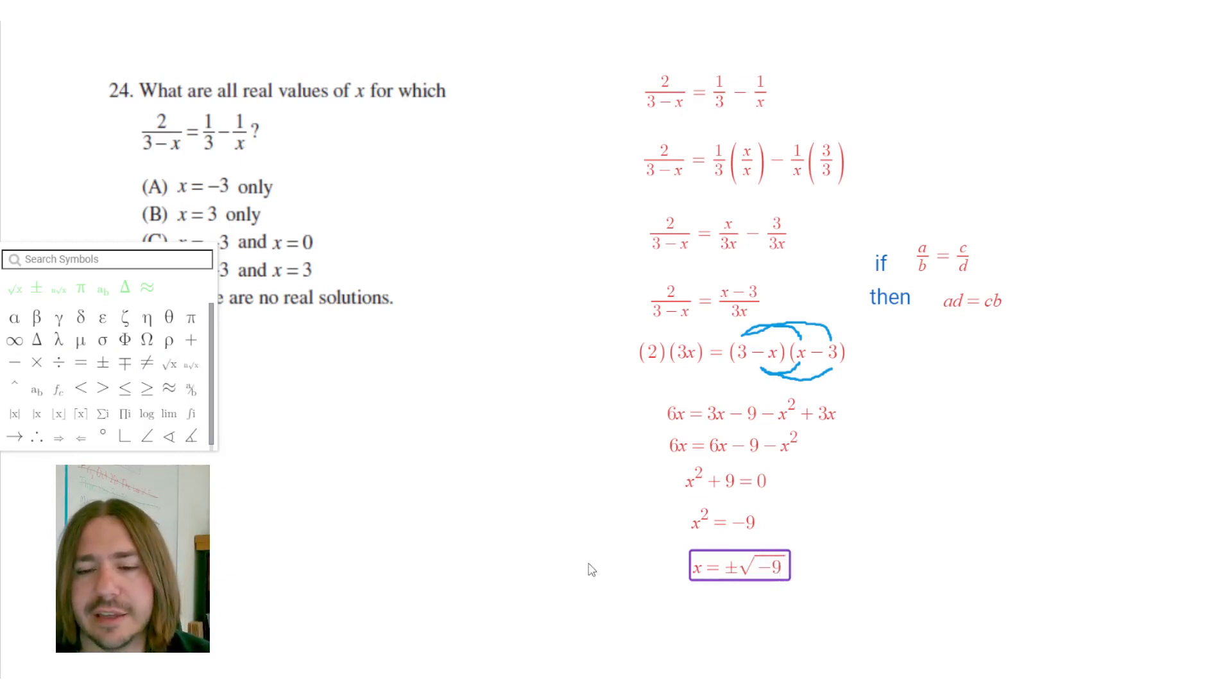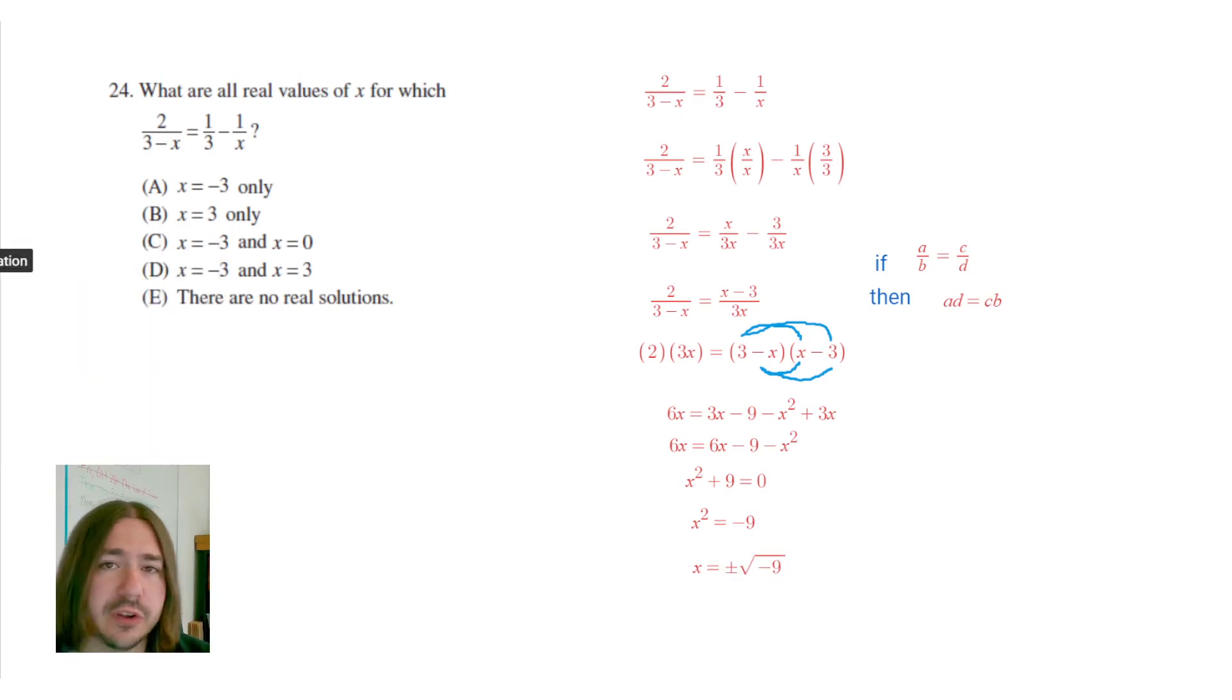So plus or minus the square root of negative 9. Now, since 9 is negative, when you take the square root, it's going to result in a complex number with an imaginary number. If you want to simplify that completely, the square root of 9 is 3. And the square root of negative 1, sometimes we write that as i. So one way how you could see this written is like plus or minus 3i.